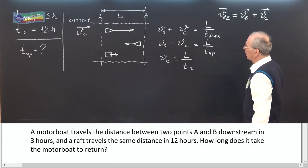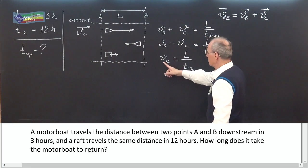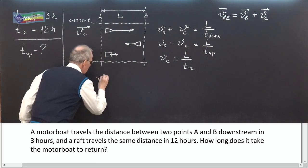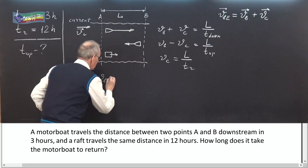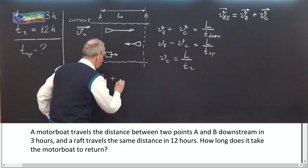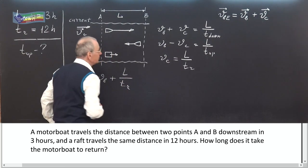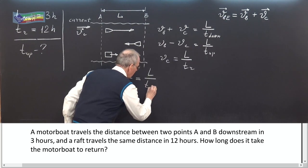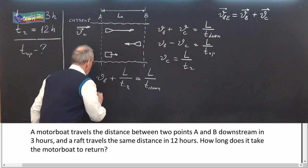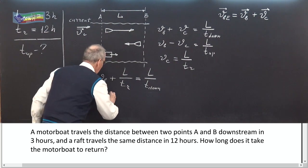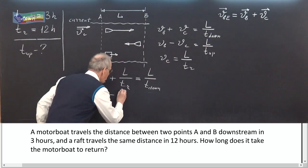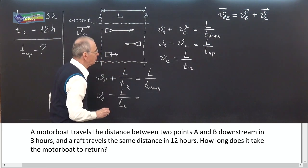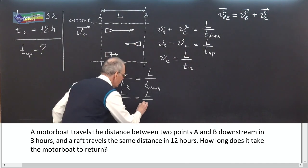Now let's substitute V-current into the two equations. From the first equation: V-boat plus L over T-raft equals L over T-down. The second equation: V-boat minus L over T-raft equals L over T-up.